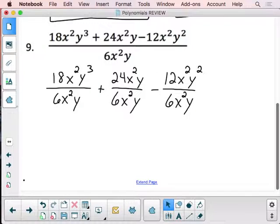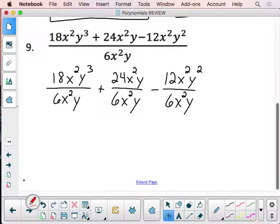Now you come back, and our answer to this problem is going to essentially be simplifying each of these three fractions. So let's focus on this first one. I'll color code them. If I simplify this first one right here, 18 divided by 6 is going to give me 3.